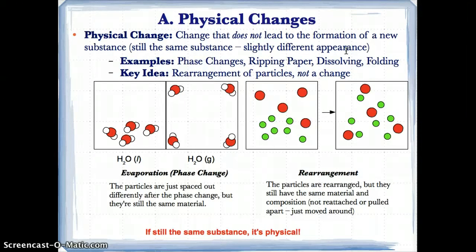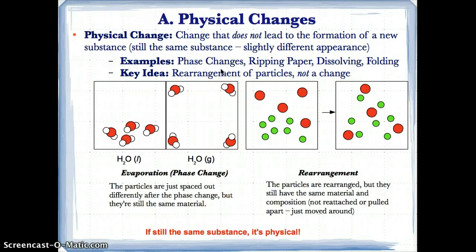For example, ice is the same thing as water — they're both H₂O. One is just a solid form and the other looks like a puddle, but they're still the same substance. Something like melting, or a phase change in general, would be a physical change because you're not changing the composition or the substance. You're still having the same substance, just with a slightly different appearance.